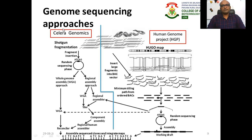Celera Genomics used the shotgun fragmentation approach, while the Human Genome Project used the BAC-to-BAC approach, cloning DNA into bacterial artificial chromosomes. Both methods produced the same result — a gene sequence. The shotgun approach was faster, but eventually both parties published their sequences in the public domain, found their sequences matched, and in 2003 jointly published the human genome publicly.